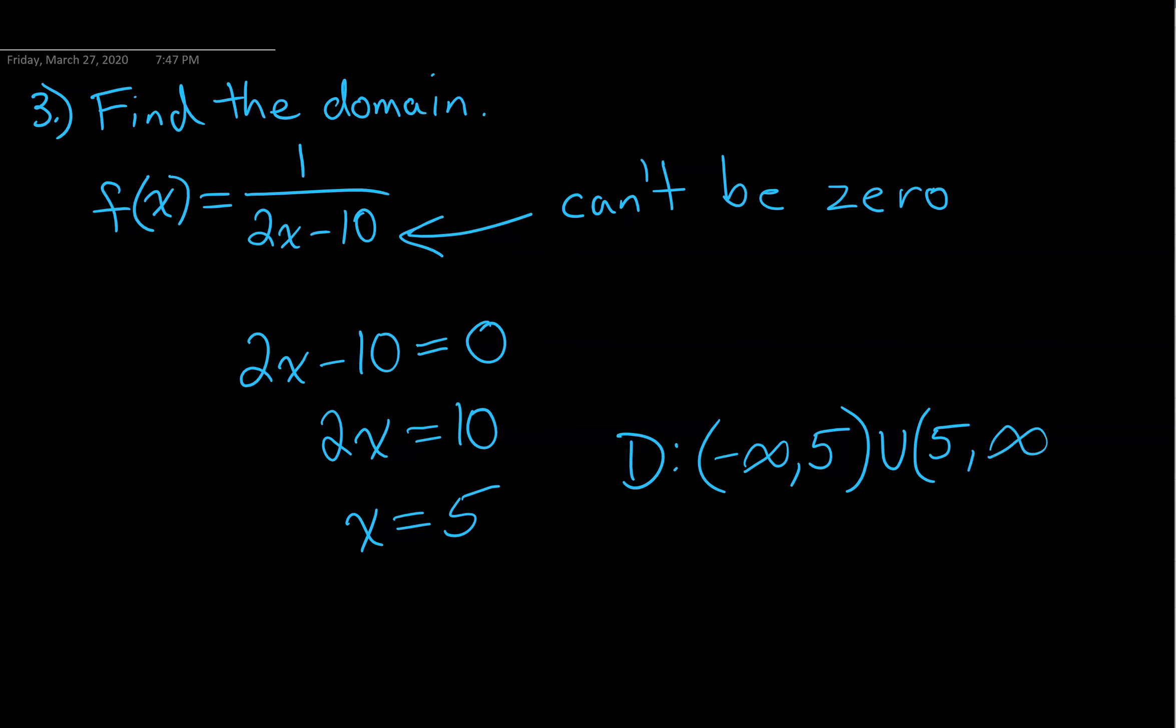The idea is we're just leaving the value x equals five out of our domain. Everything else is in there, so we're good to go.